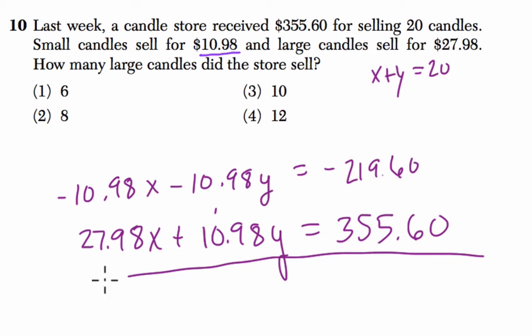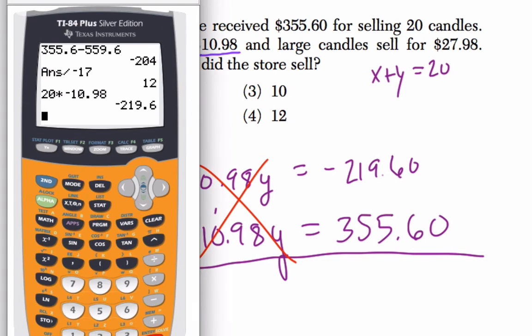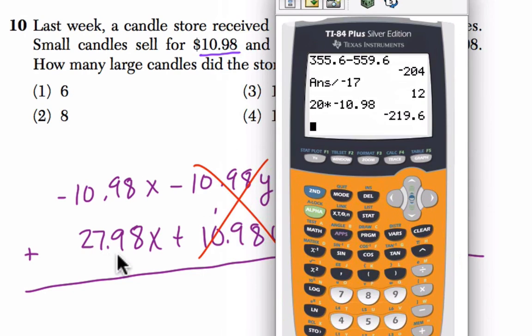Now when I add the two equations, my Y variables will cancel out. And I have negative 10.98 plus 27.98, and that's 17X.